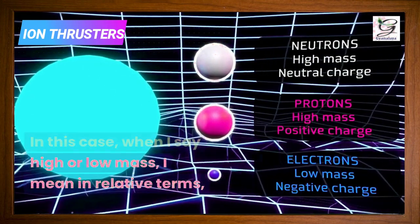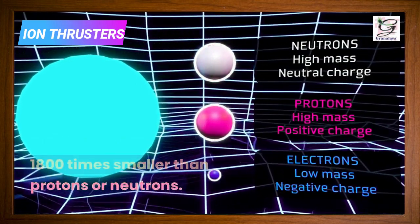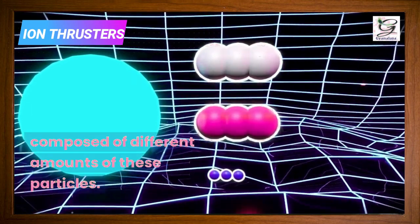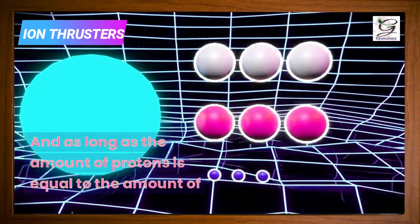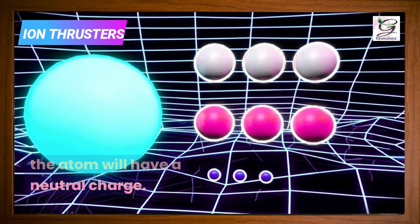When I say high or low mass I mean in relative terms, with electrons having a mass about 1800 times smaller than protons or neutrons. The atoms of different elements are composed of different amounts of these particles, and as long as the amount of protons equals the amount of electrons, the charges cancel out and the atom will have a neutral charge.